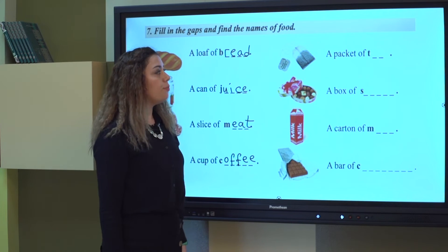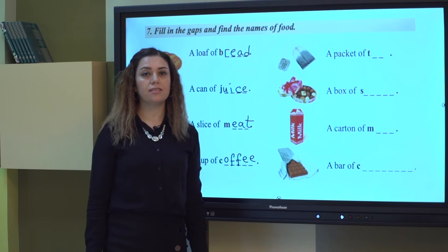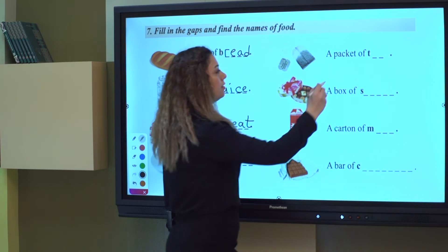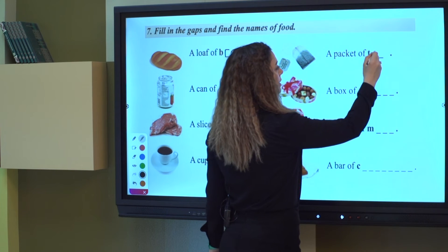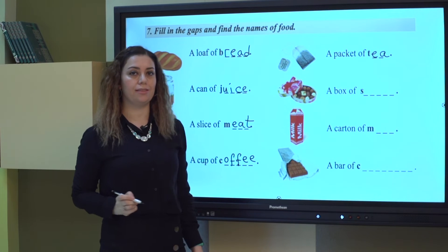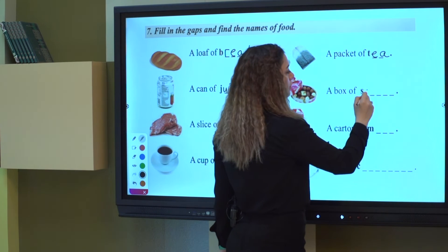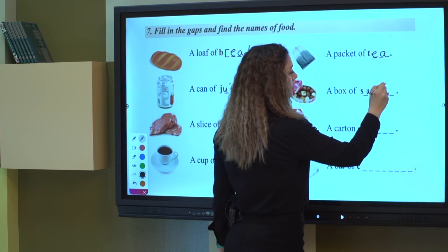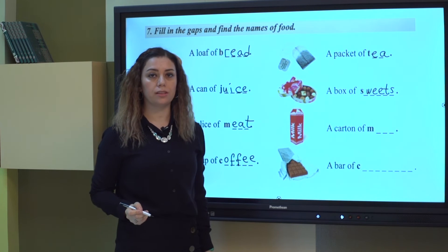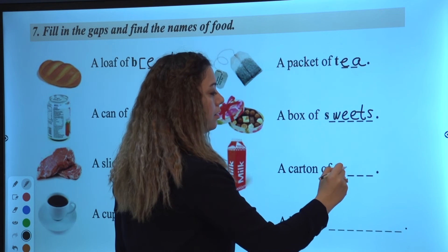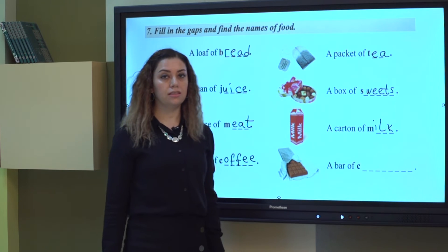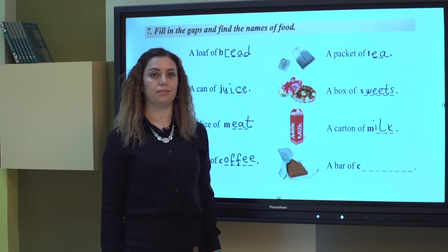Let's continue. A cup of tea. A packet of tea — or you can say a bag of tea; this is called a tea bag. A box of sweets. A carton of milk. And the last one, a bar of chocolate.